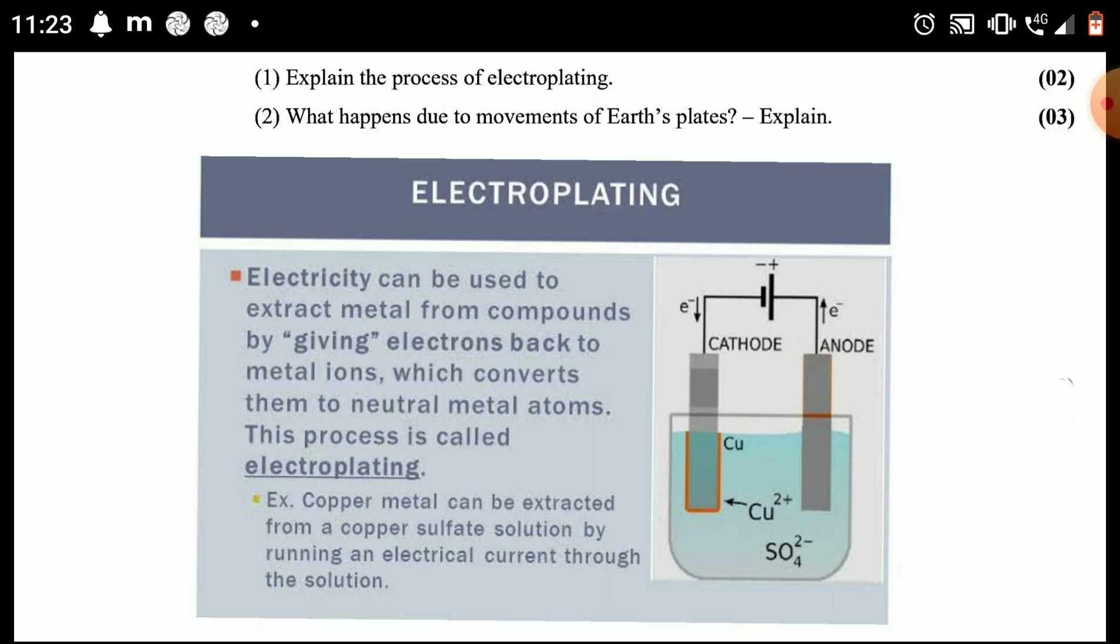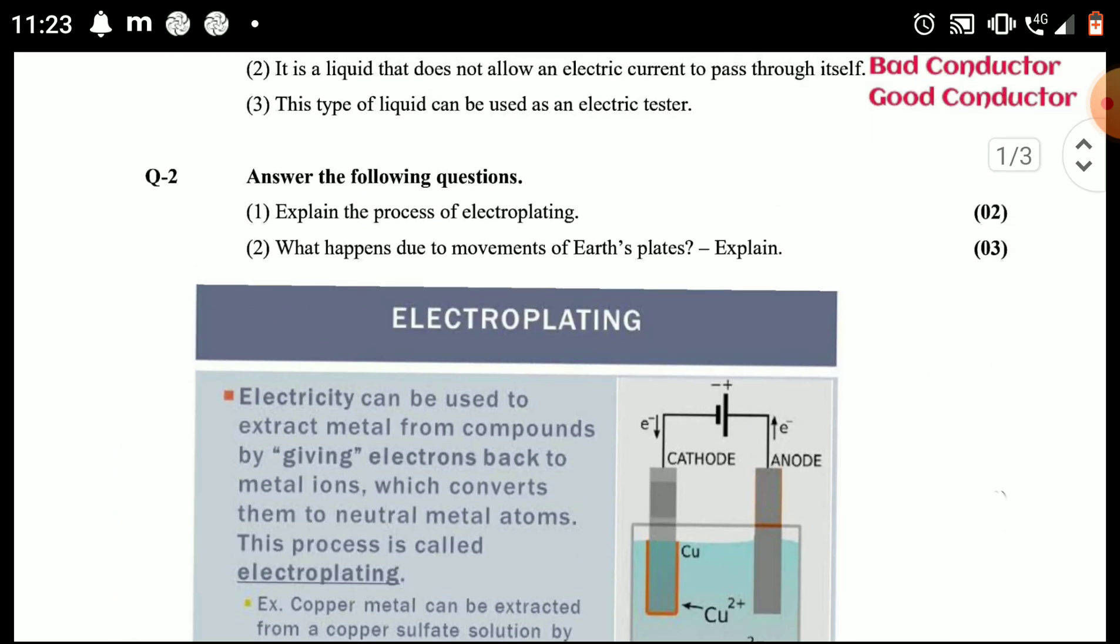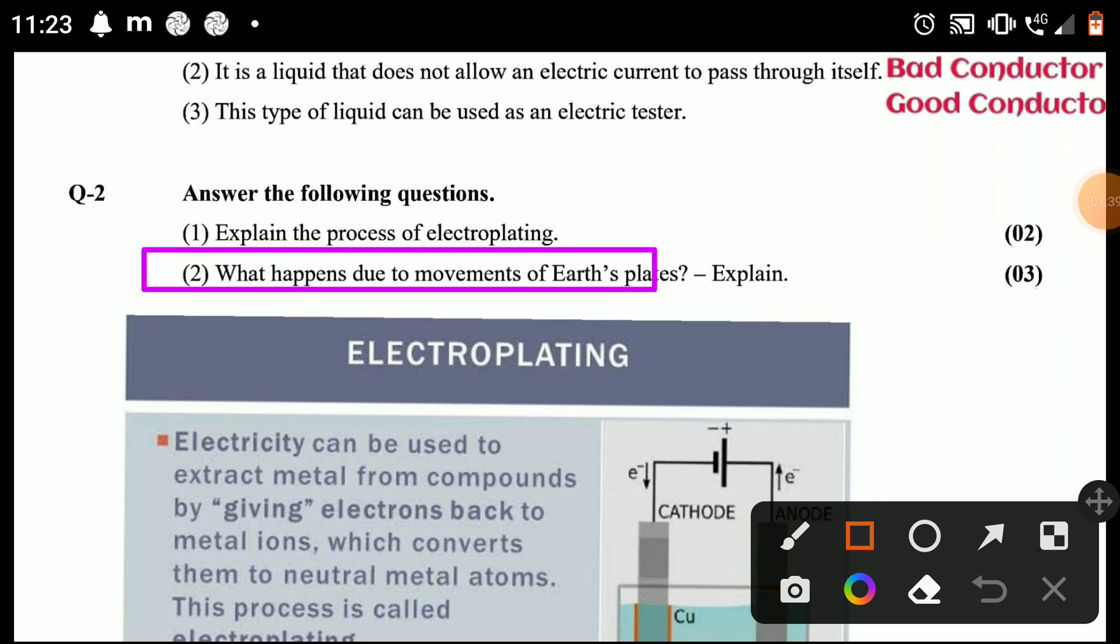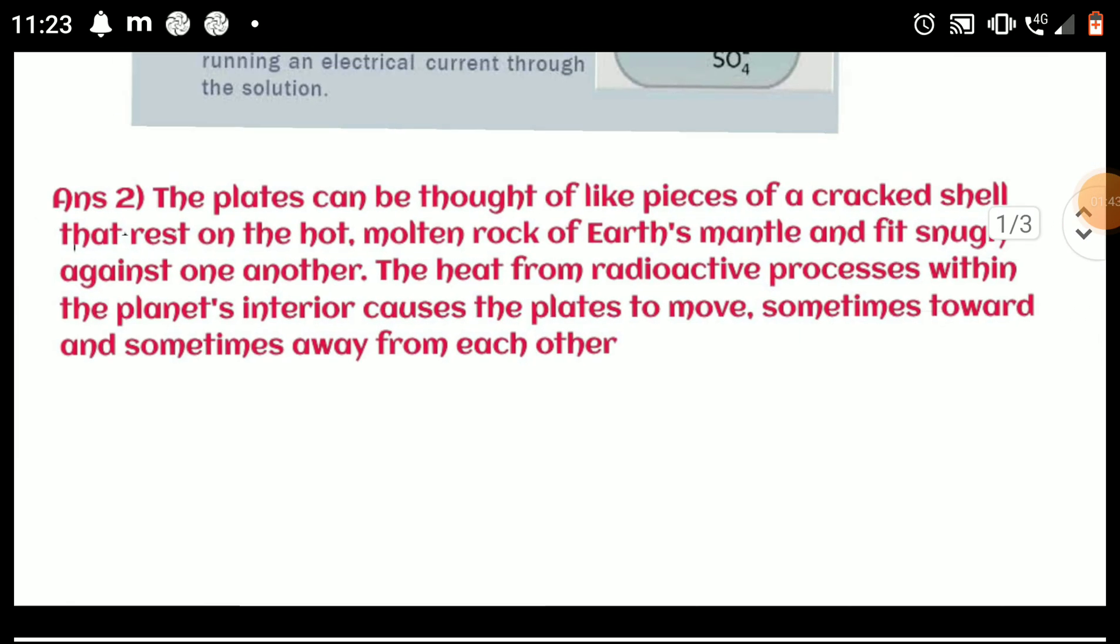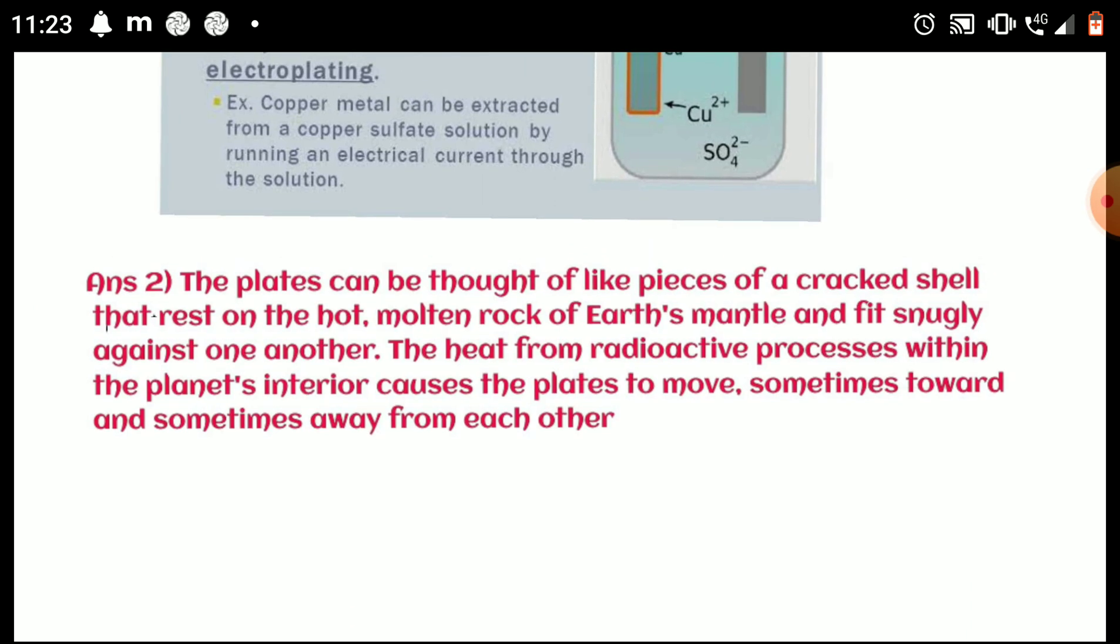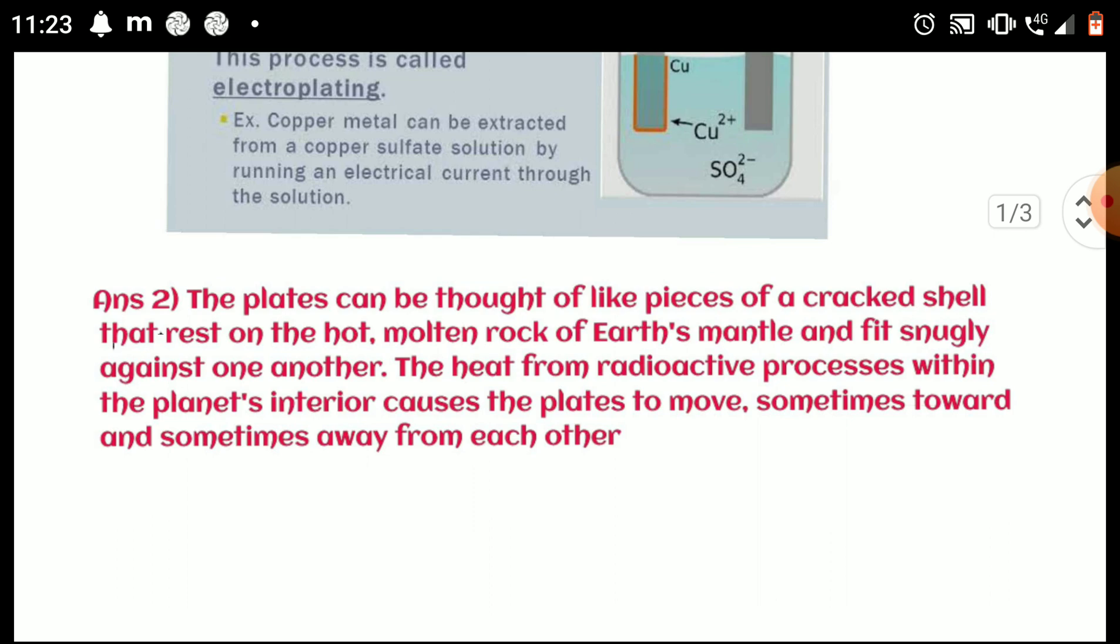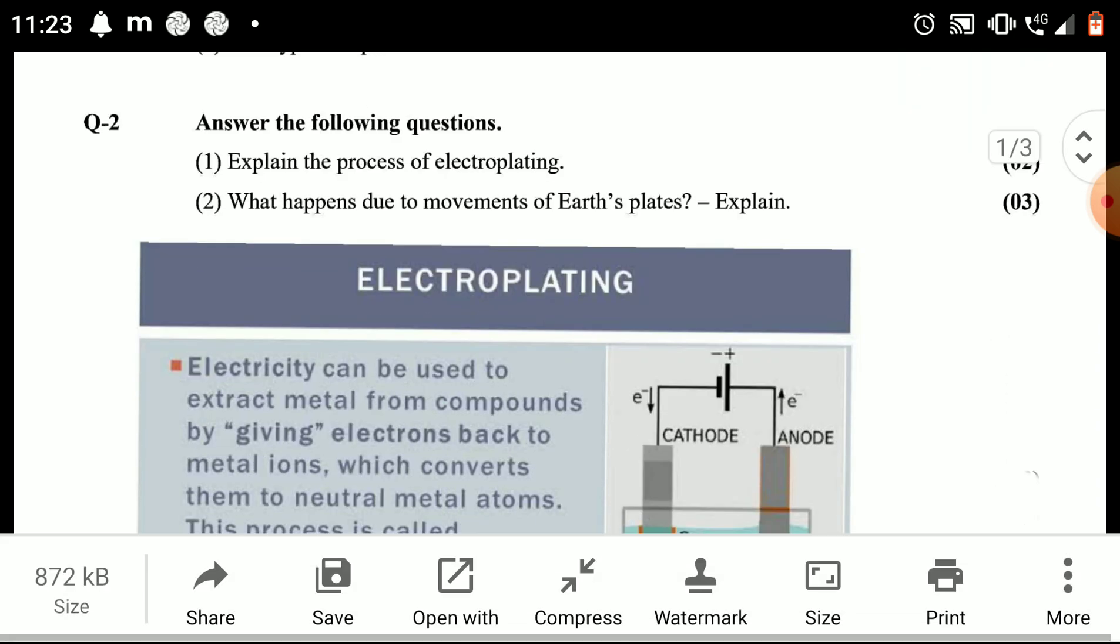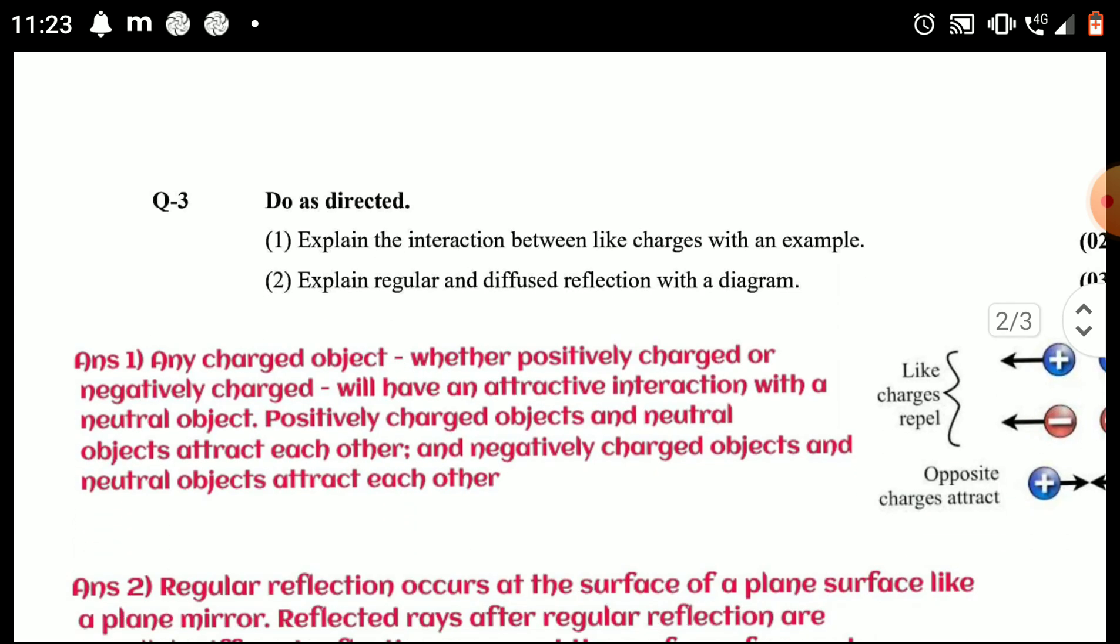Copper sulfate and iron. Question number two: what happens due to movements of earth's plate? The plates can be thought of like pieces of a cracked shell that rest on the hot, molten rock of Earth's mantle and fit snugly against one another. The heat from radioactive processes within the planet's interior causes the plates to move, sometimes toward and sometimes away from each other.